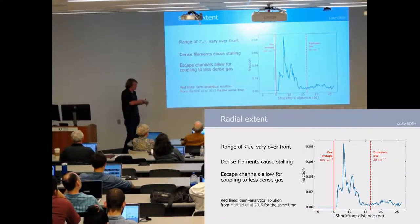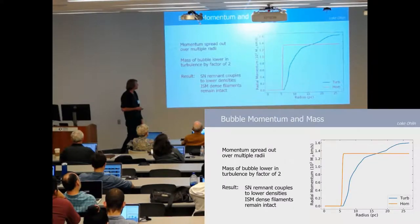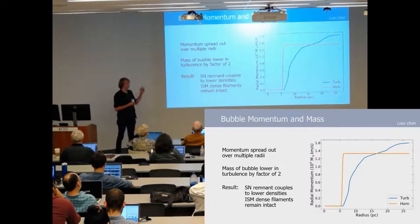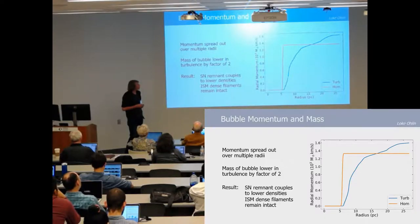And again, this is mainly due to the escape channels of the low density gas allowing for gas to flow out, and this could then affect where we actually find our momentum. Here we have the accumulated momentum of the bubble and as you can see we find much of it in the initial shock front but it also spreads out across the entire thing.